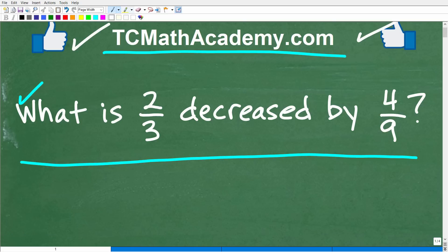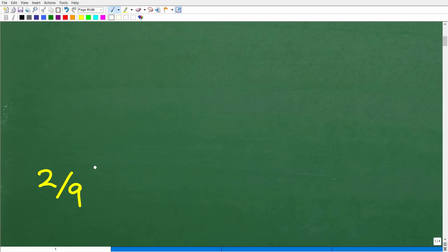Alright, so let's just take a look at this question one more time before I show you the answer. So what is two-thirds decreased by four-ninths? So the key to figuring this problem out is we have to understand what this word decreased means, at least from a mathematical standpoint. And then we're going to have to perform a mathematical operation between these two fractions. So let's go ahead and take a look at the answers. So the correct answer is the following: two-ninths.